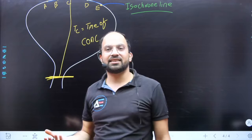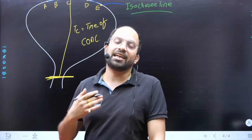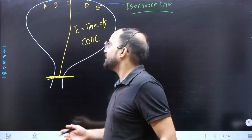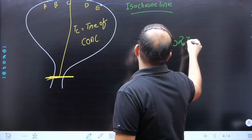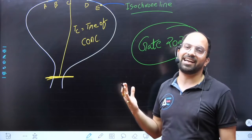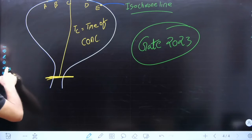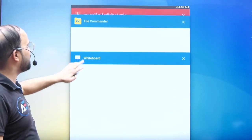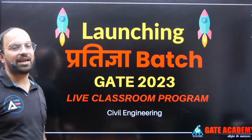So that covers time of concentration and what is the isochrone line. For all the details and for GATE 2023, if you have made your target that you have to show something, then you can join our Prathigy batch.